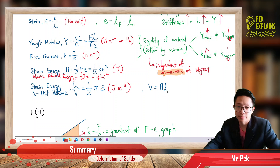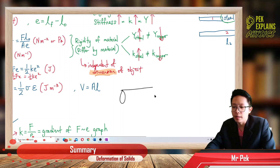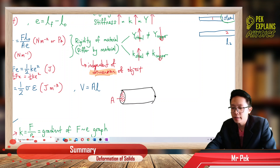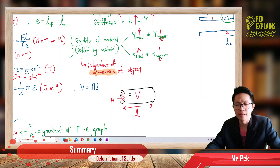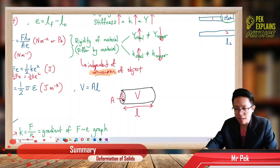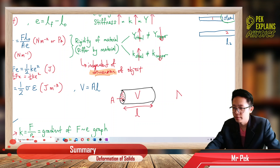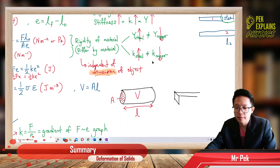Volume is area times length — it's like a wire, where the cross-sectional area times the length gives the volume. The area can be any shape: for a circular cross-section, area equals π r² or π d² over 4. The radius is diameter divided by 2, so substituting gives diameter squared over 4. If the area is a square, it equals L times L, so L squared. The area depends on the shape.